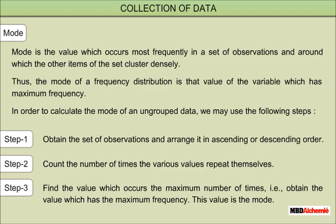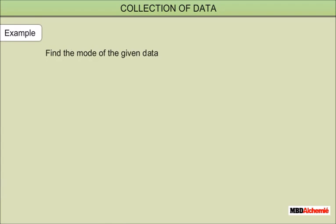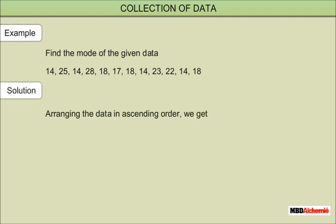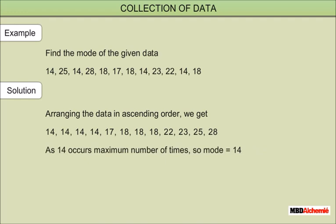This value is the mode. For example, find the mode of the given data: 14, 25, 14, 28, 18, 17, 18, 14, 23, 22, 14, 18. Arranging in ascending order: 14, 14, 14, 14, 17, 18, 18, 18, 22, 23, 25, 28. As 14 occurs the maximum number of times, mode equals 14.